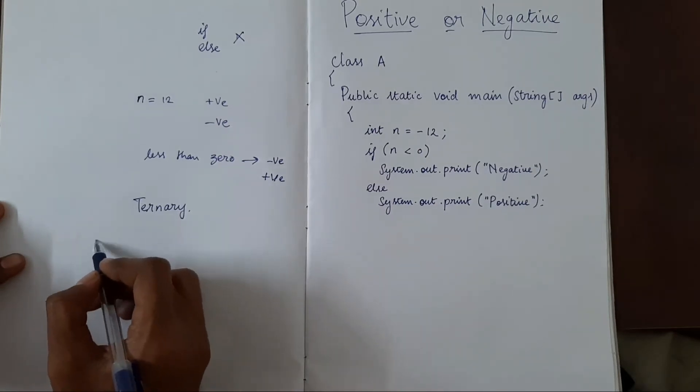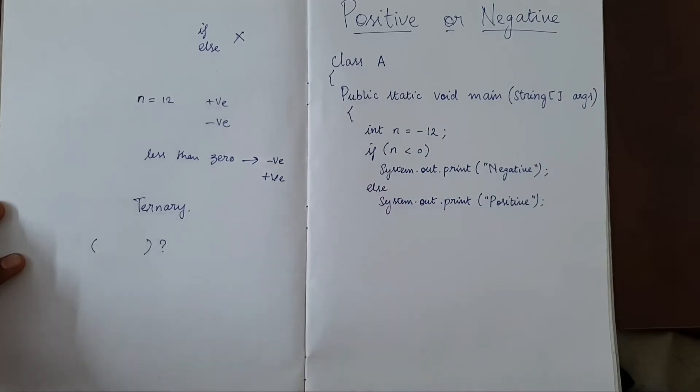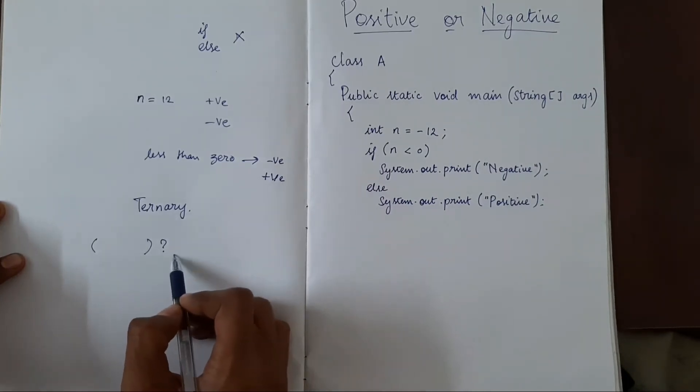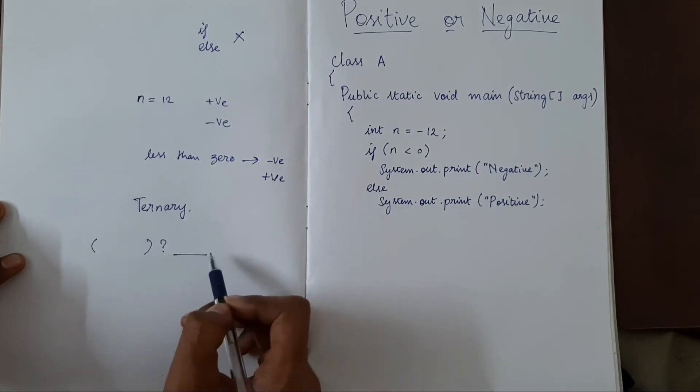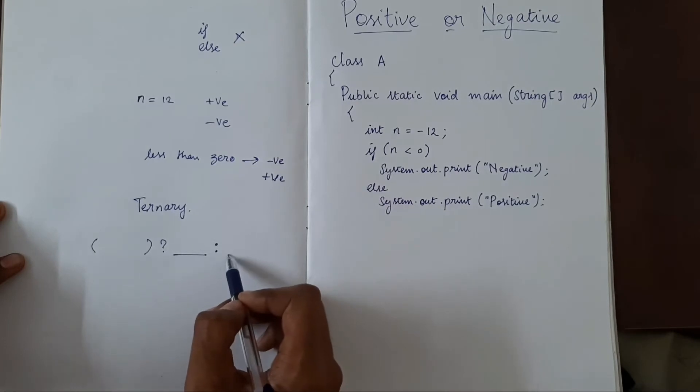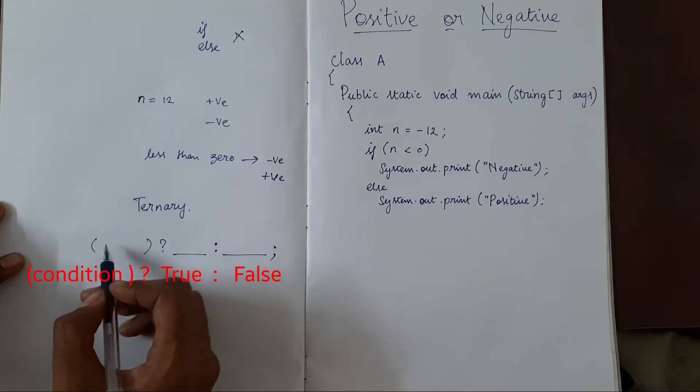We have a statement and we put a question mark saying whether it is true or false. If it is true, whatever has to be done should be written here. Then we have a colon, and then here we put the false condition.